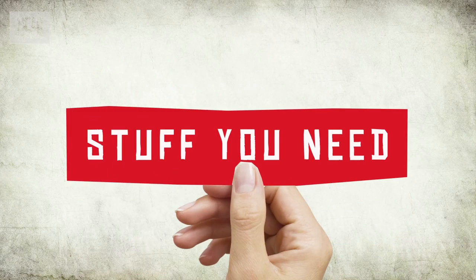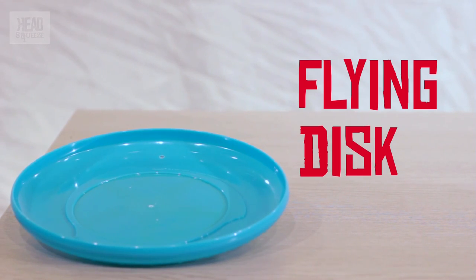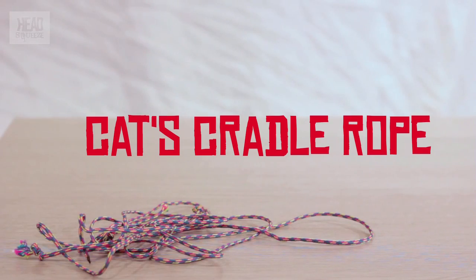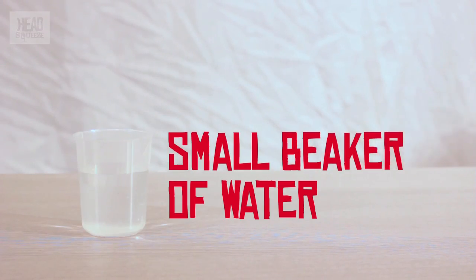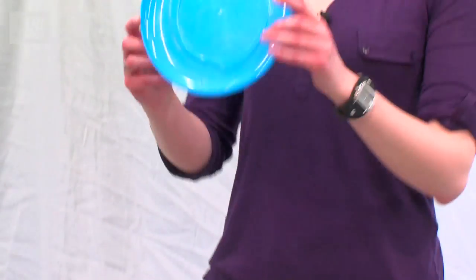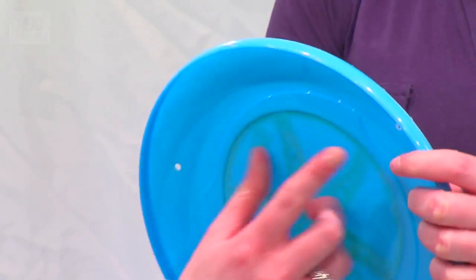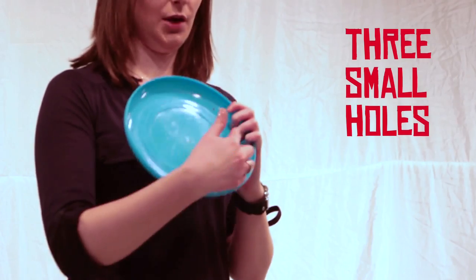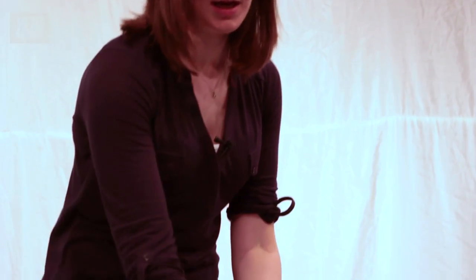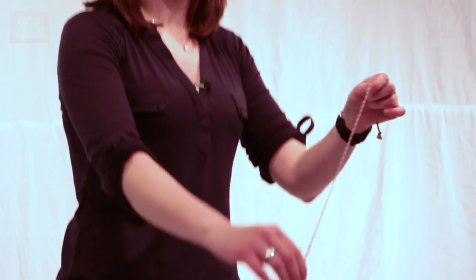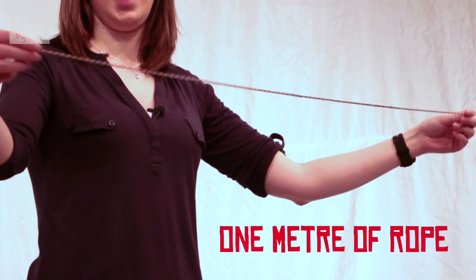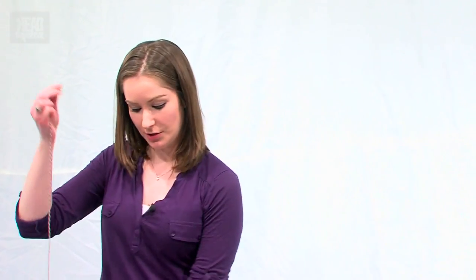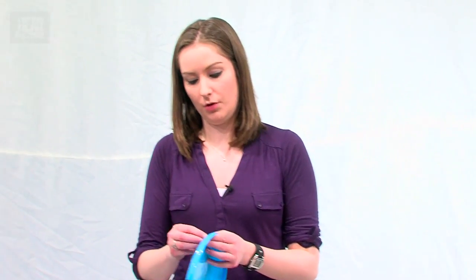So for this I'm going to use some very simple props here. I've got a Frisbee, some Cat's Cradle rope, and a small beaker of water. Now in my Frisbee I have drilled three small holes at equal distance from each other. Now, each piece of your rope should be about a meter in length and you're going to thread these through the holes.